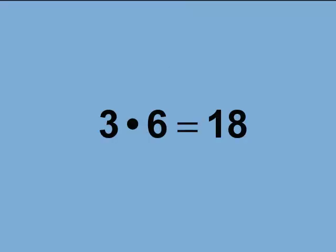When you multiply two numbers, each of them is a factor. Look at this example. 3 times 6 equals 18. The product, 18, is the result of multiplying two factors, 3 and 6.